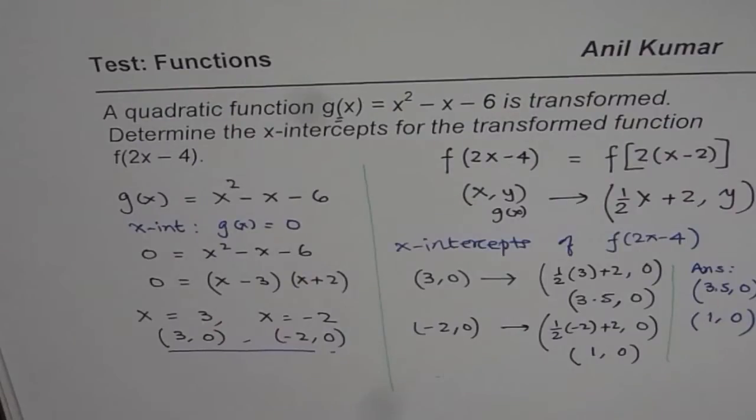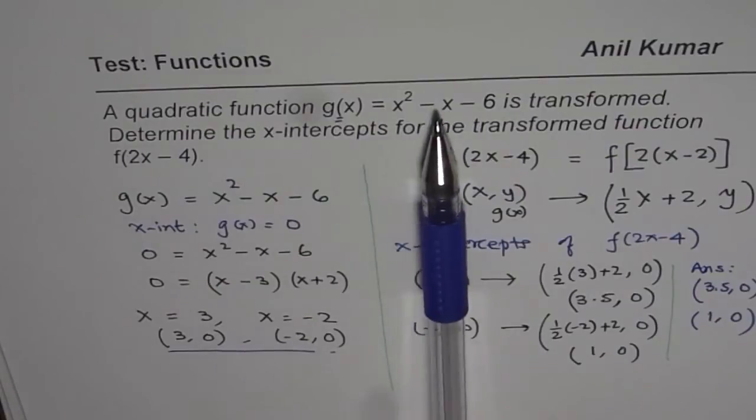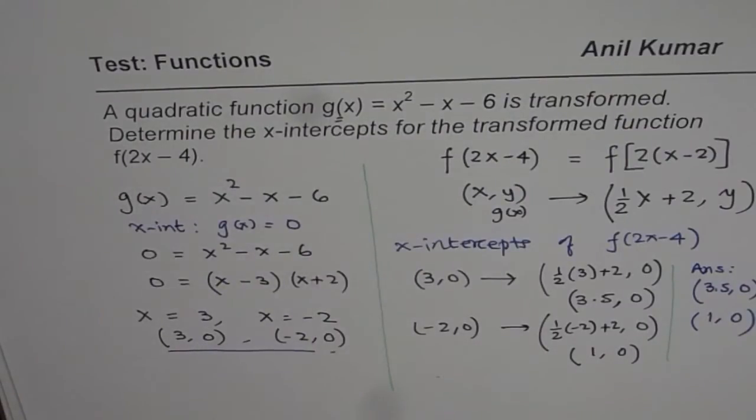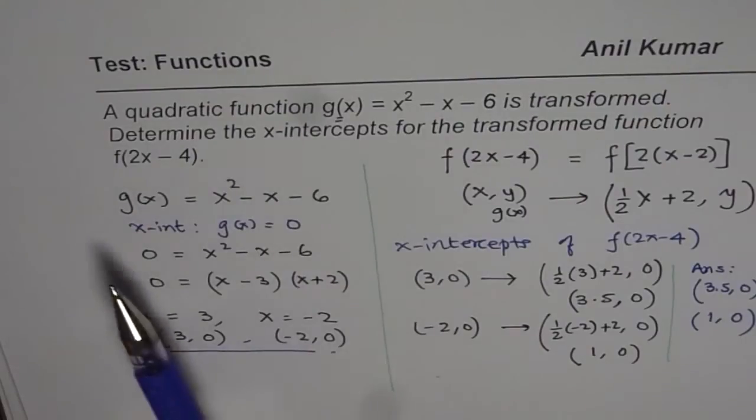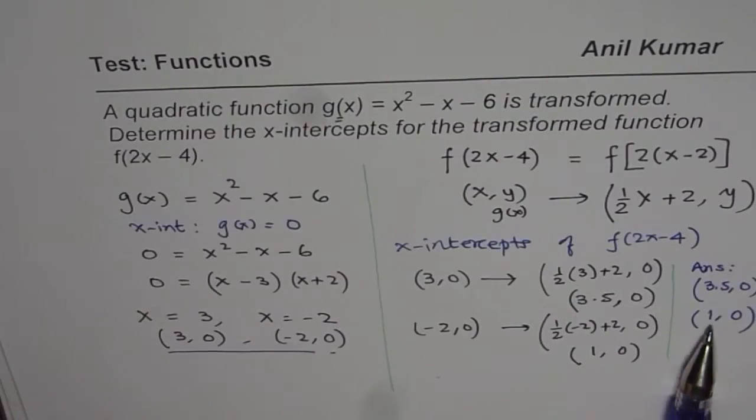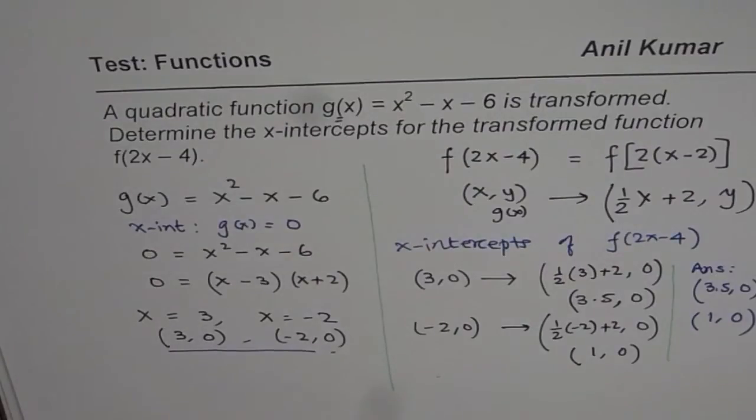I hope that helps. The strategy is that when the function is transformed, the x-intercepts also get transformed, and the points change to new values which are the x-intercepts for the transformed function. I'm Anil Kumar, and I hope it helps. Thank you and all the best.